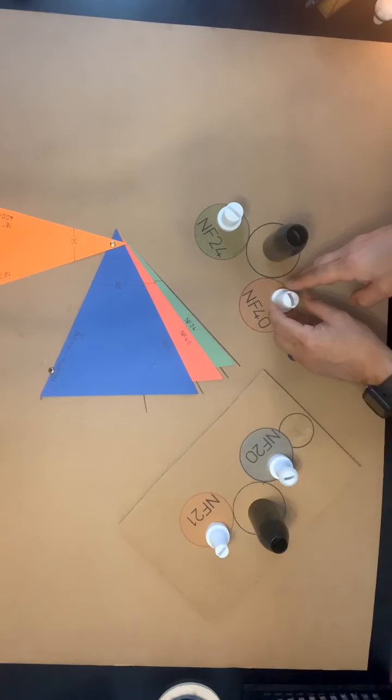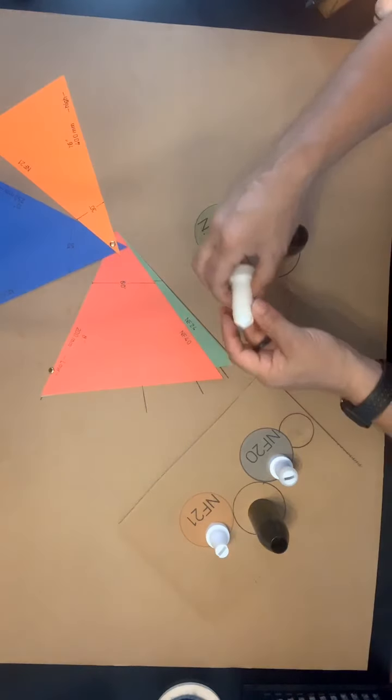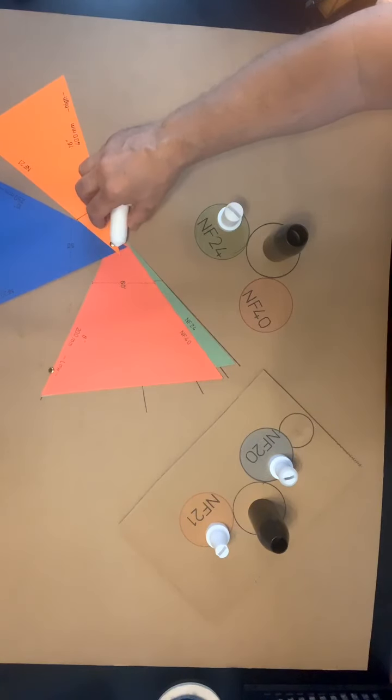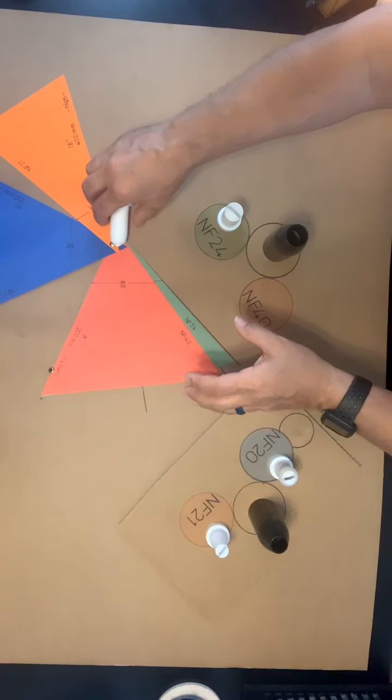Moving down to the NF-40, this one again, it comes with it. It produces around a 60 degree angle and it's good for that 8 to 10 inch target distance also. This is a lower velocity.